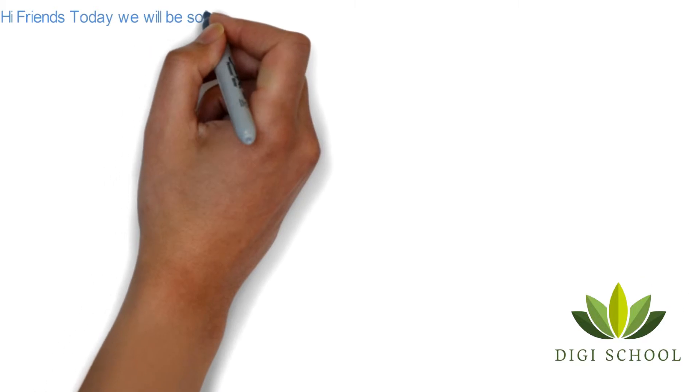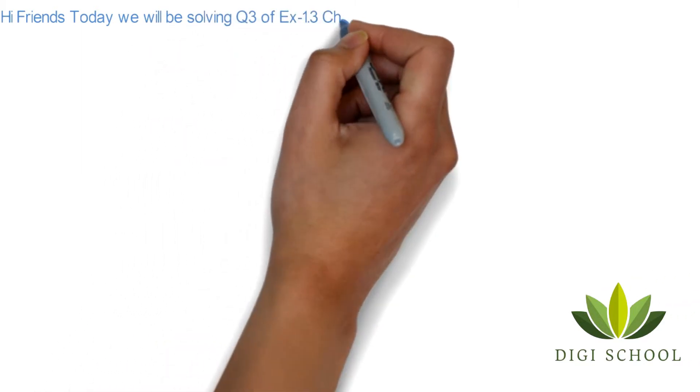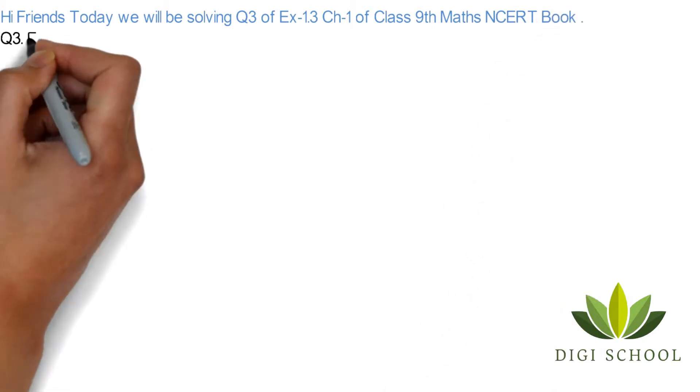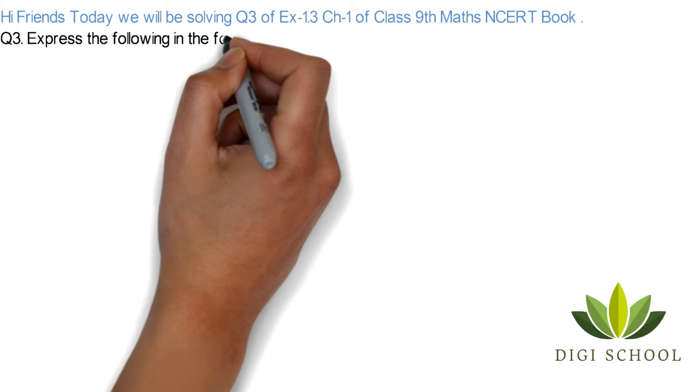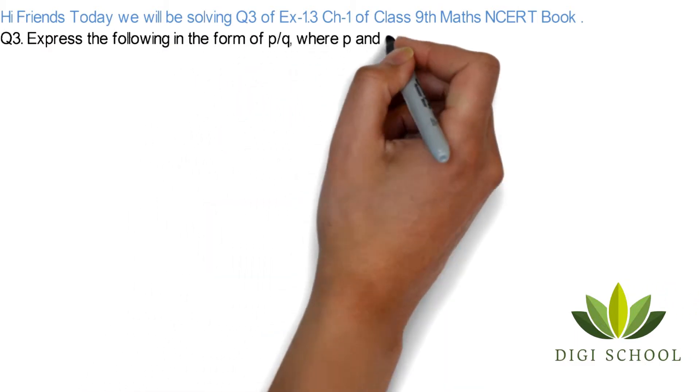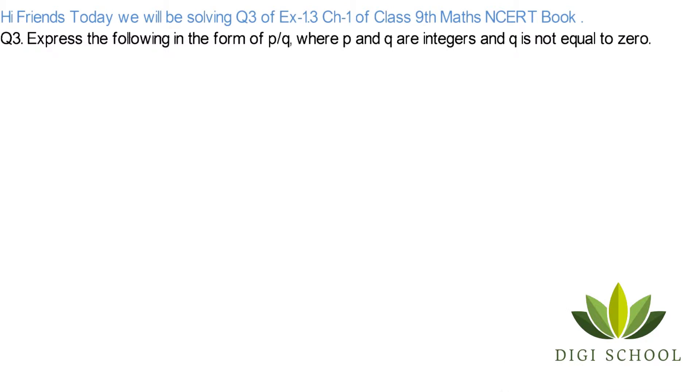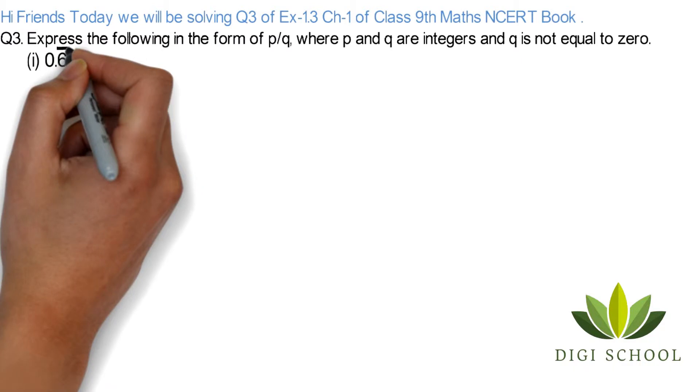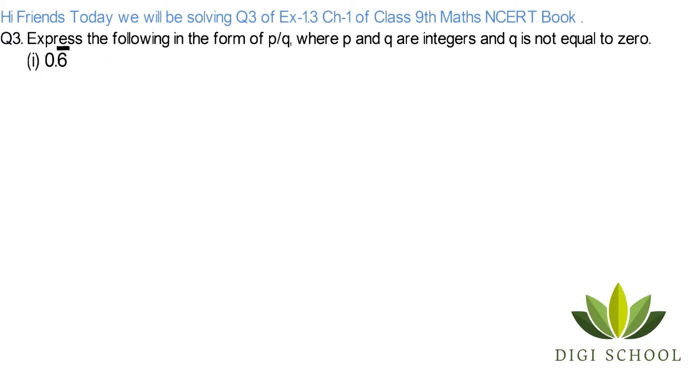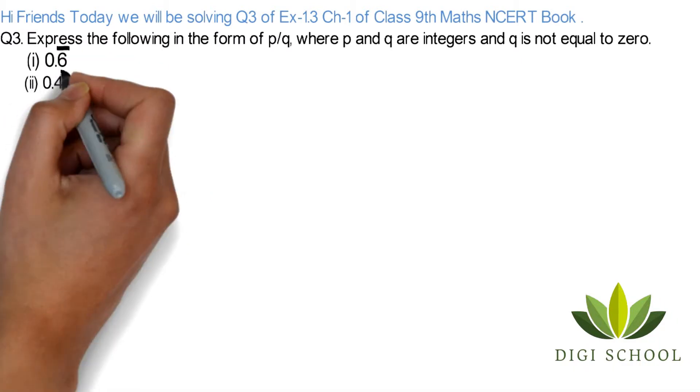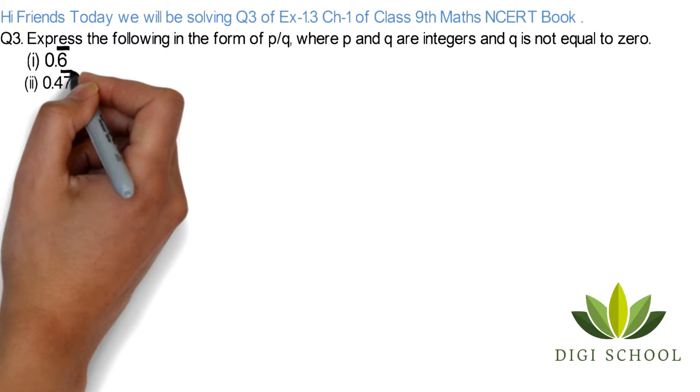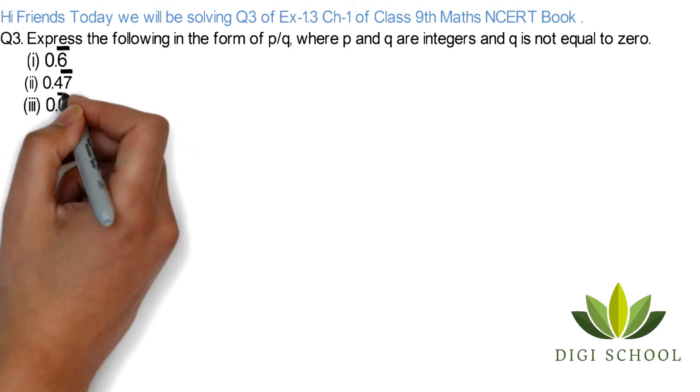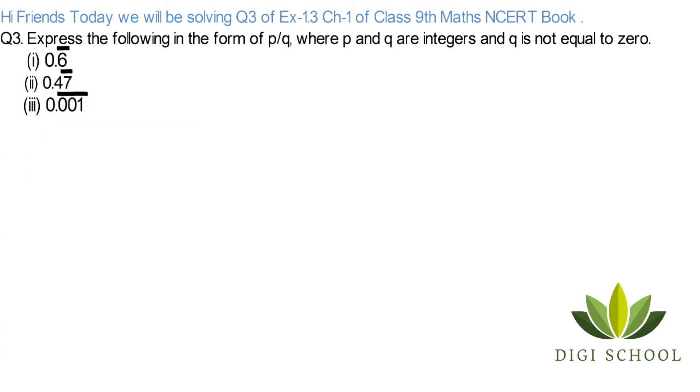Hi friends, today we will be solving Question 3 of Exercise 1.3, Chapter 1 of Class 9th Maths NCERT Book. Express the following in the form of p upon q where p and q are integers and q is not equal to zero. First is 0.6 bar, second one is 0.47 bar—remember, bar means recurring—third one is 0.001 bar.